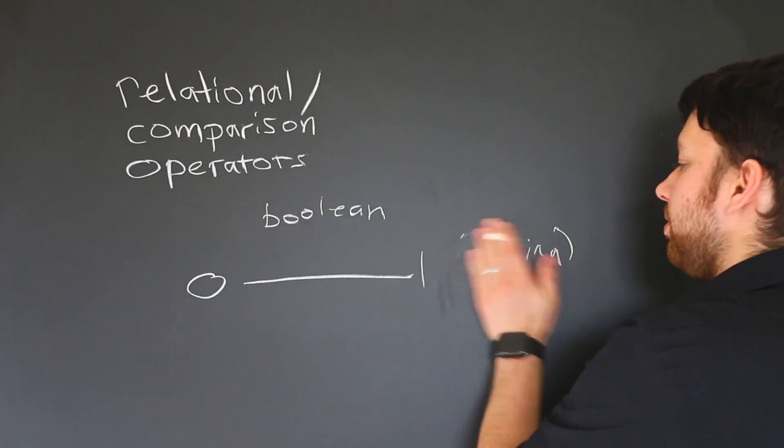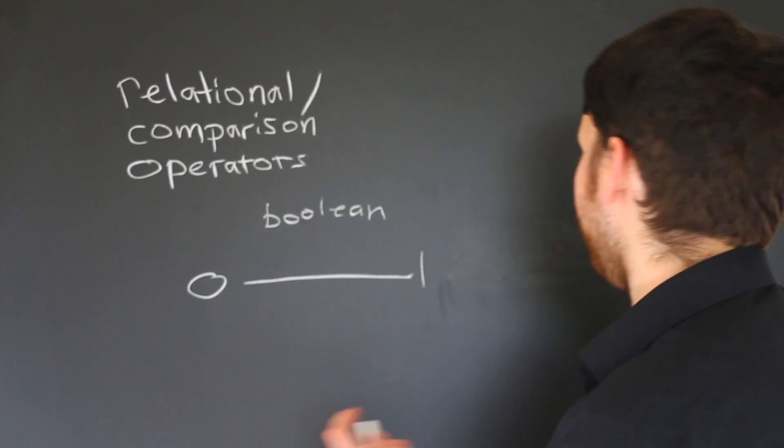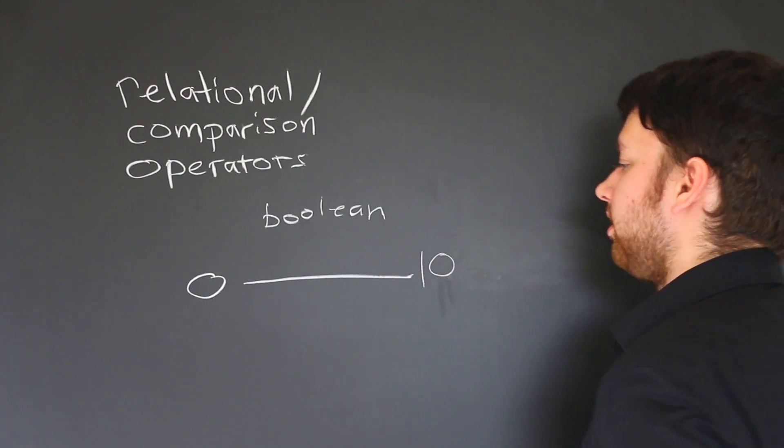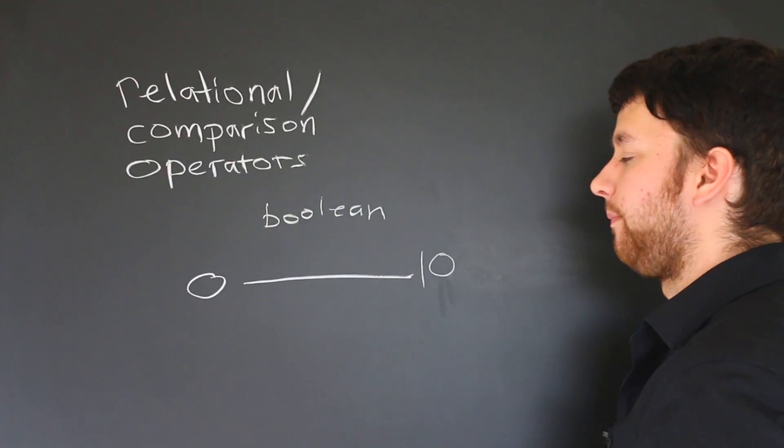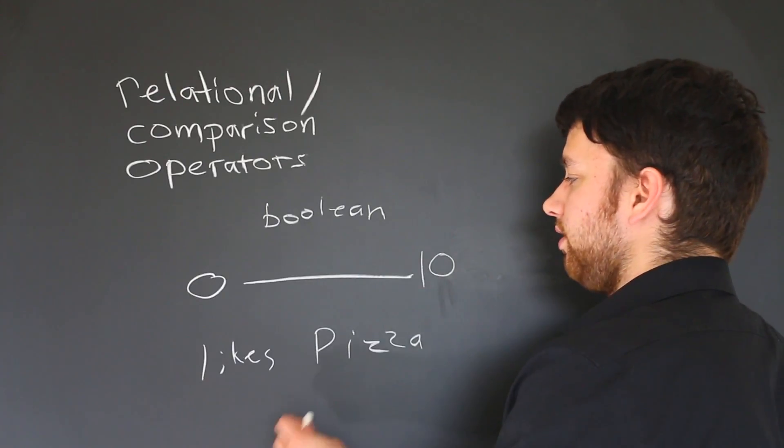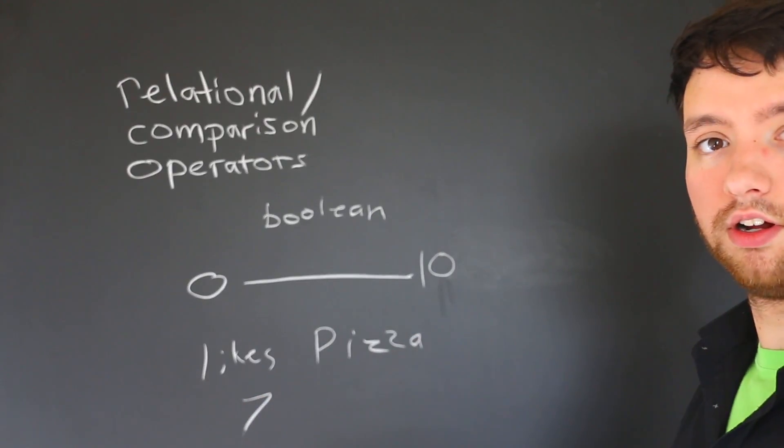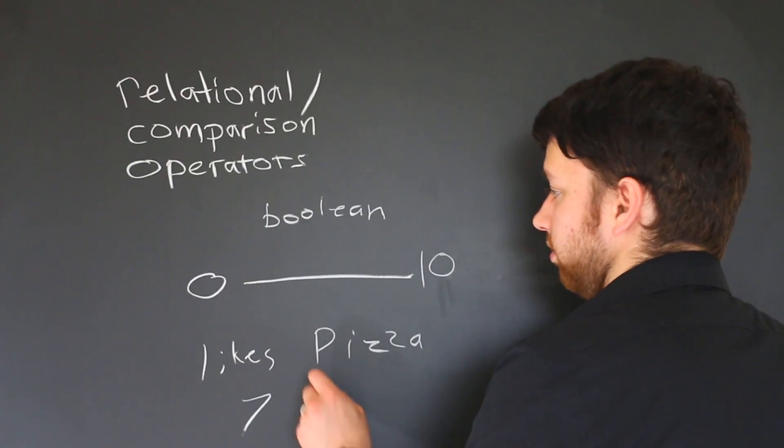Let me just kind of explain. Let's say we wanted to make a variable to contain how much somebody liked pizza, and we could say that the high is 10. We could say that we're trying to determine if someone likes pizza, and we could say that anybody that has seven or higher on this scale likes pizza.